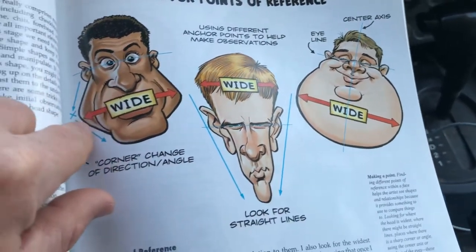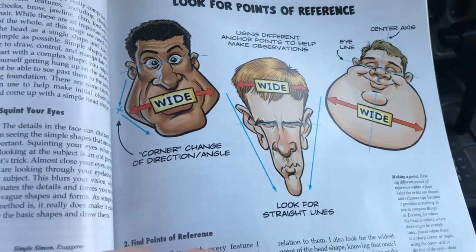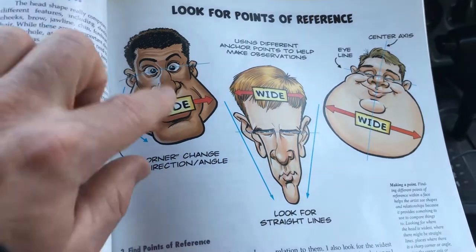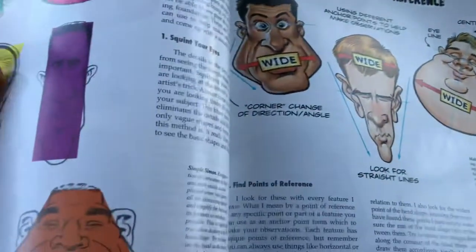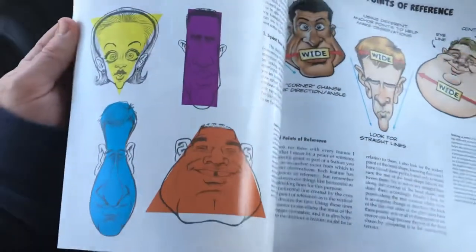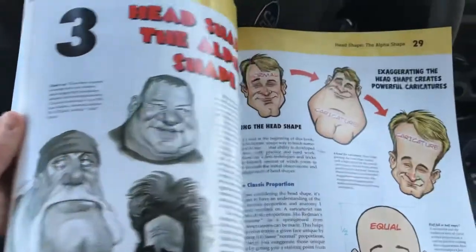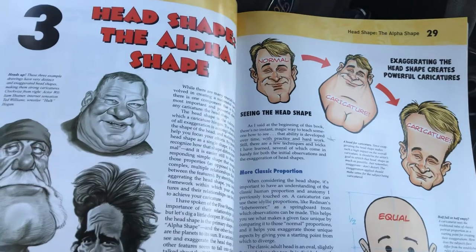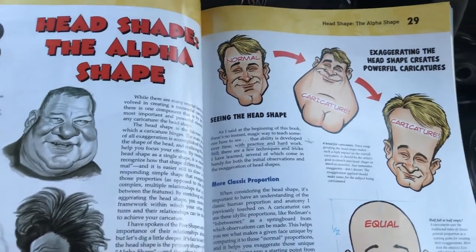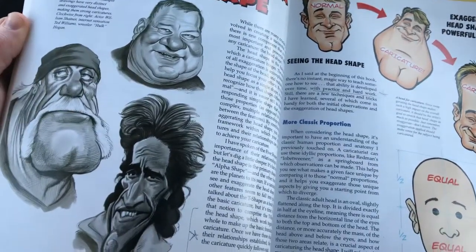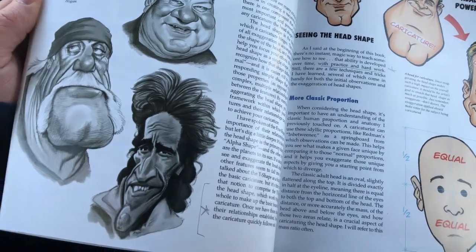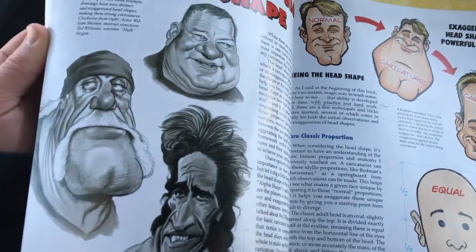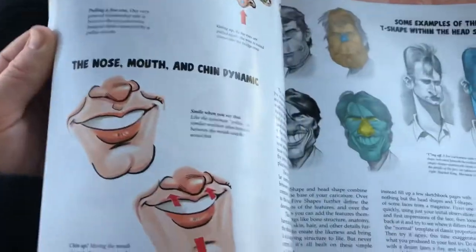Are they wide at the jaw? Where is most of the mass in the person's face — below the eyes or above the eyes? I know I spoke about T-shapes before. The head shape is really the most important. You can see what shapes those heads are, and you know who they are as soon as you see it. Here are some more T-shapes.